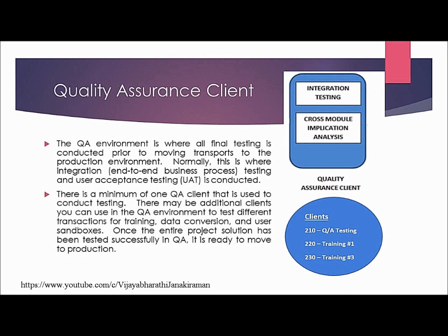The quality assurance client is where all final testing is conducted prior to moving transports to the production environment. This is where end-to-end business process testing and user acceptance testing are conducted. There is a minimum of one quality assurance client for testing. You may also have additional clients under the QA environment for various purposes such as training, data conversion, and user sandboxes.